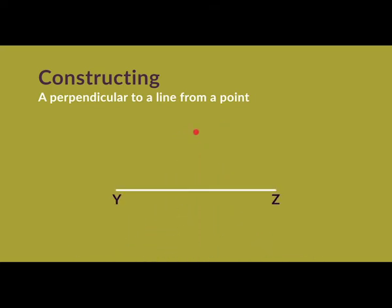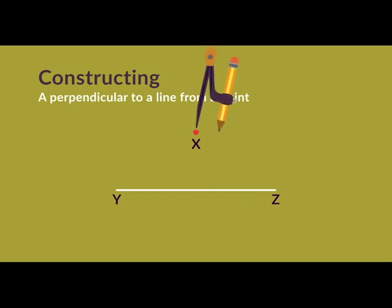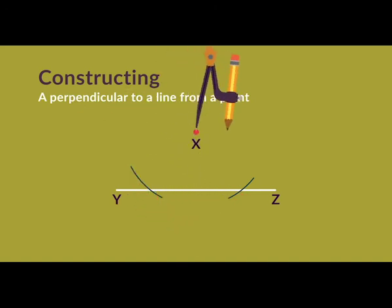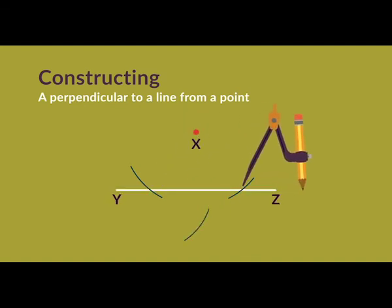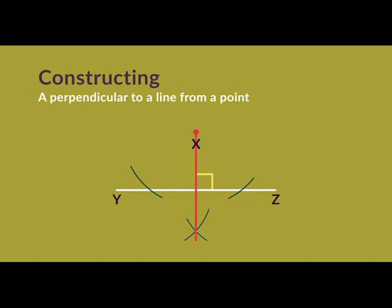If you have a line YZ and a point X not on the line, construct the perpendicular from X to the line as follows. Step 1: label the line and the point. Step 2: with the compass point at X and set to the same width, draw two arcs on YZ. Step 3: place the compass pointer at each arc intersection on YZ and draw arcs below the line to intersect each other. Step 4: join point X to the intersection of the arcs. We created the perpendicular by making a line segment on YZ and bisecting it.